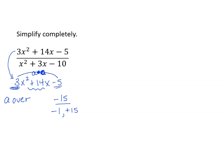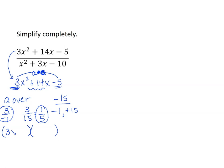Now I'll use what I call the a-over method. You take the value of a, which is 3, and put it over each of the numbers we found: 3 over negative 1 and 3 over 15. The first fraction stays as is; the second simplifies to 1 over 5. These fractions give us our binomial factors: 3 over negative 1 becomes 3x minus 1, and 1 over 5 becomes x plus 5. So the top factors as (3x minus 1)(x plus 5). We had to use the a-over method because a is not 1.